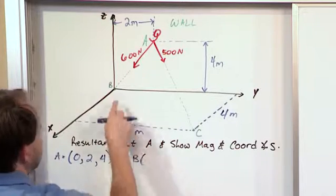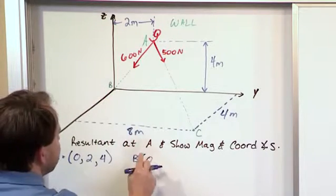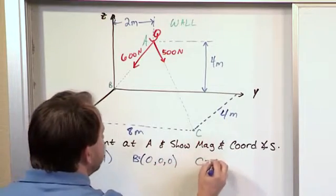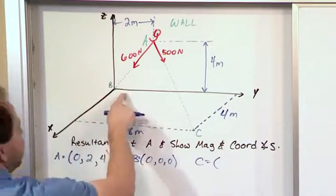Point B is labeled here at the origin. So by definition, that's 0, 0, 0. And then point C, the X component is this, which is 0.